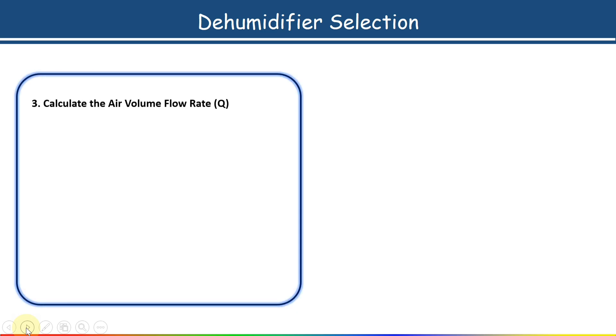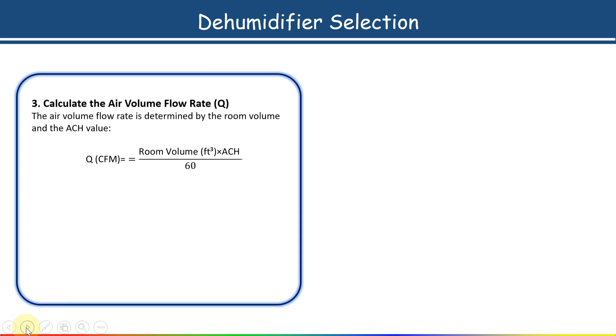The third step is to calculate the air volume flow rate. The formula is: Q = (Room Volume in cubic feet × ACH) / 60.